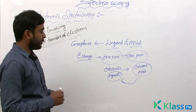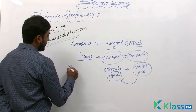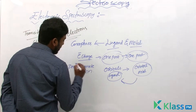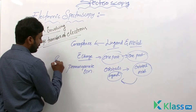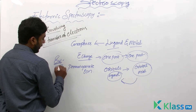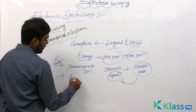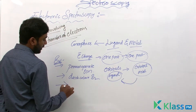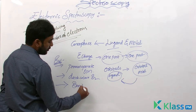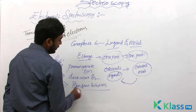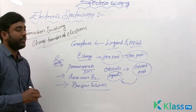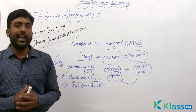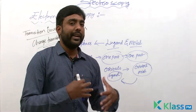As examples of charge transfer transitions in electronic spectroscopy, we can take the permanganate ion, dark colored iodine, and the iodine-benzene solution. These illustrate charge transfer of electrons in electronic spectroscopy.